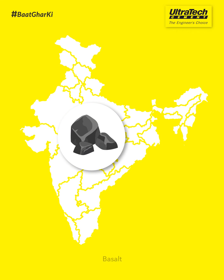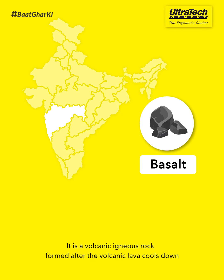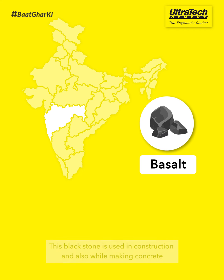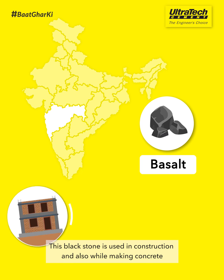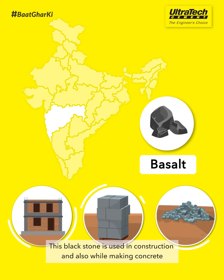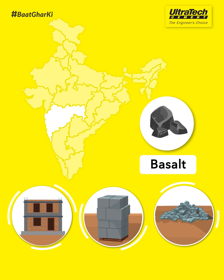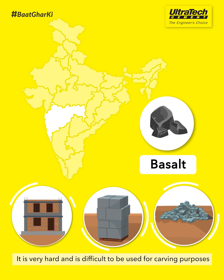Basalt. It is a volcanic igneous rock formed after the volcanic lava cools down. This black stone is used in construction and also while making concrete. It is very hard and is difficult to be used for carving purposes.